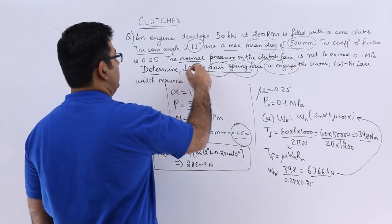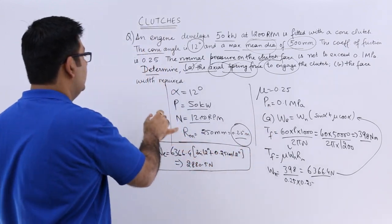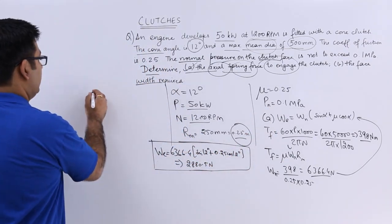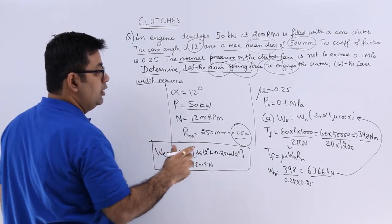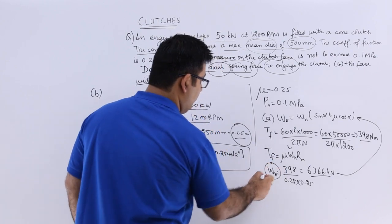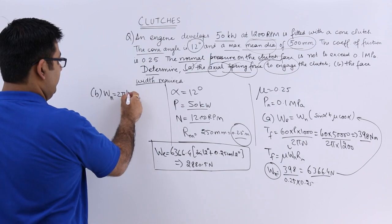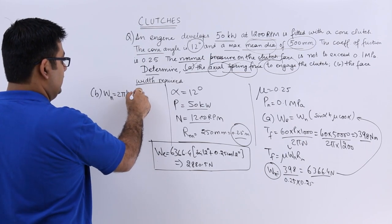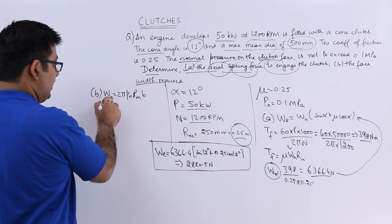So this takes care of the first part of the question. The second part is to find the face fits of the cone. So you will have your value for normal load that is WN. This is 2 pi into PN into Rm, that is the mean radius, into B. So from this expression I can find out B.